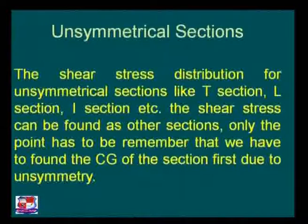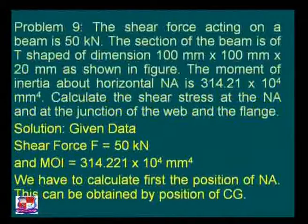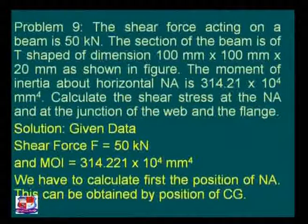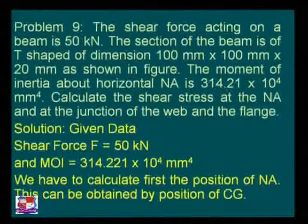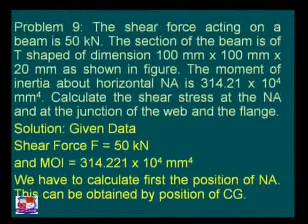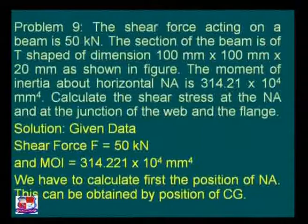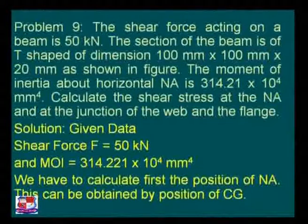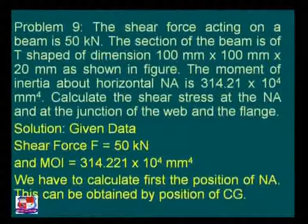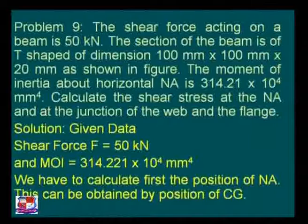We must first find the CG. Let us take a simple problem to understand how we can draw the shear stress distribution diagram. The shear force acting on a beam is 50 kilo Newton. The section of the beam is T-shaped with dimensions 100 mm × 100 mm × 20 mm. The moment of inertia about the horizontal neutral axis is given as 314.21 × 10⁴ mm⁴.